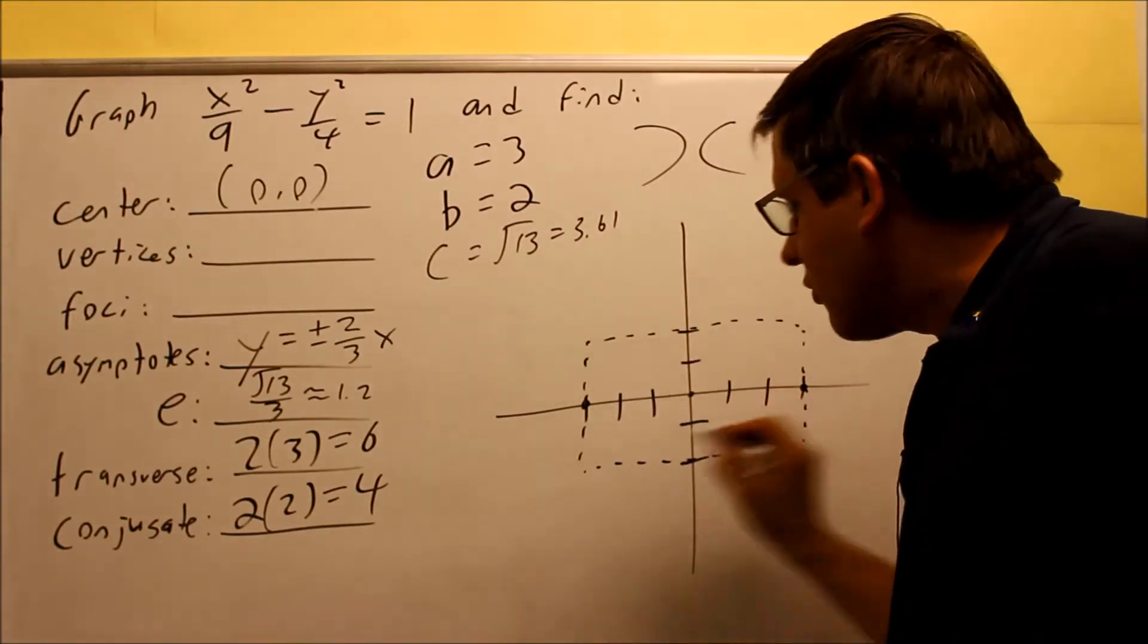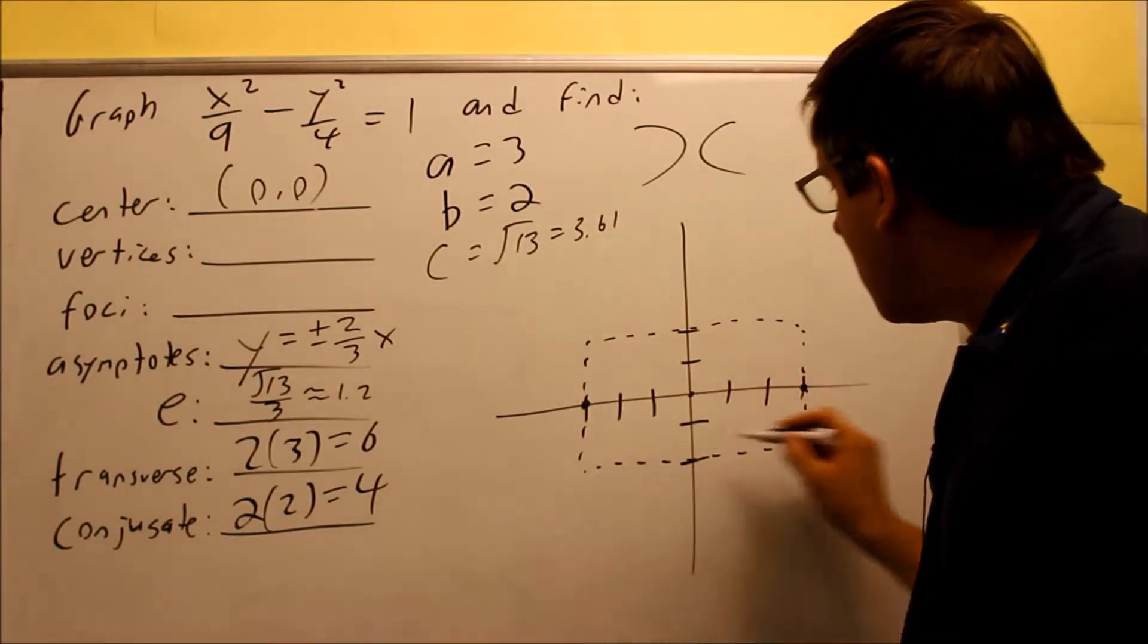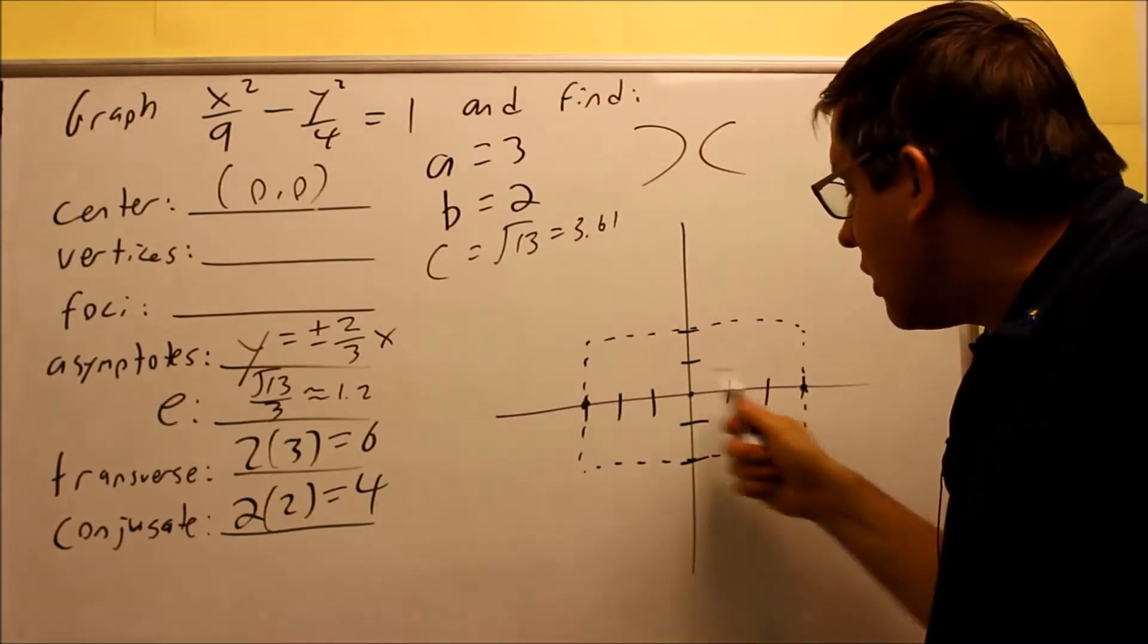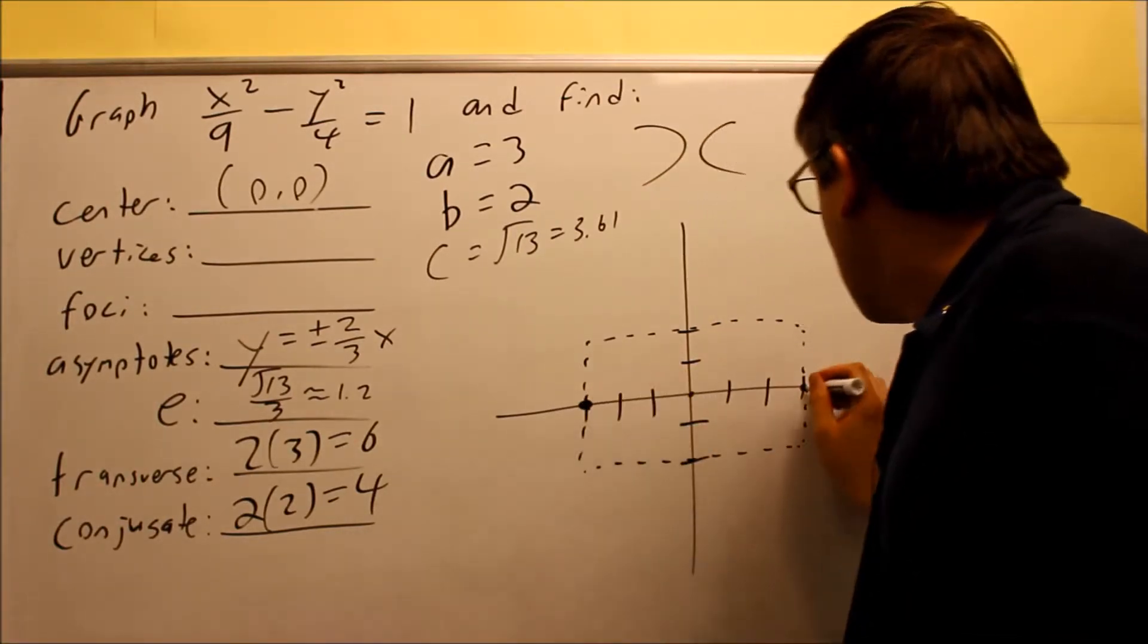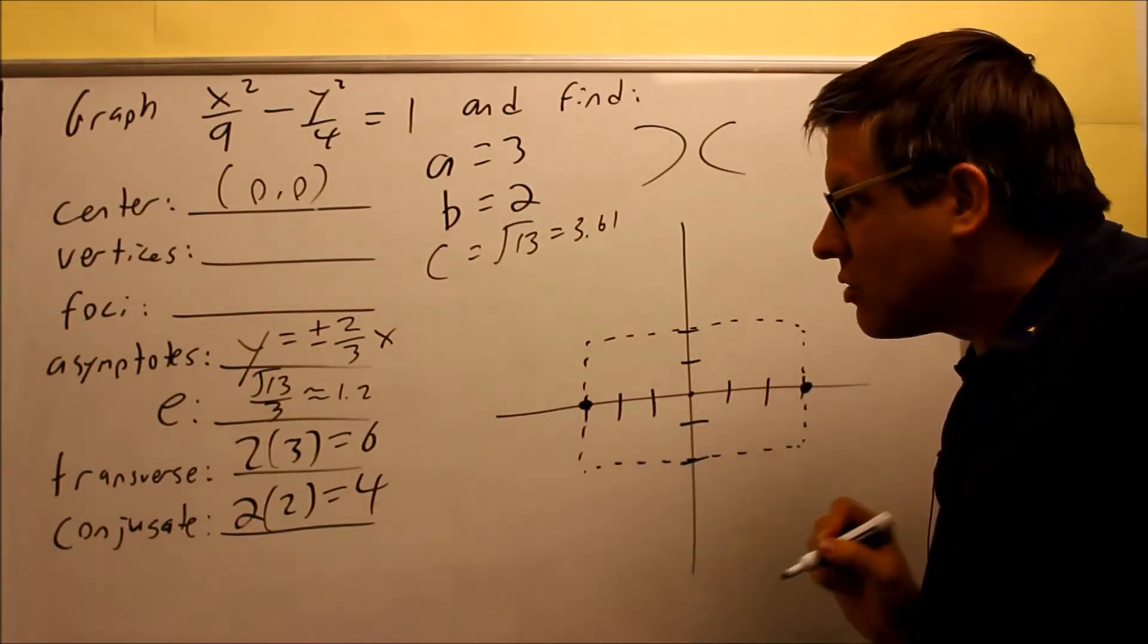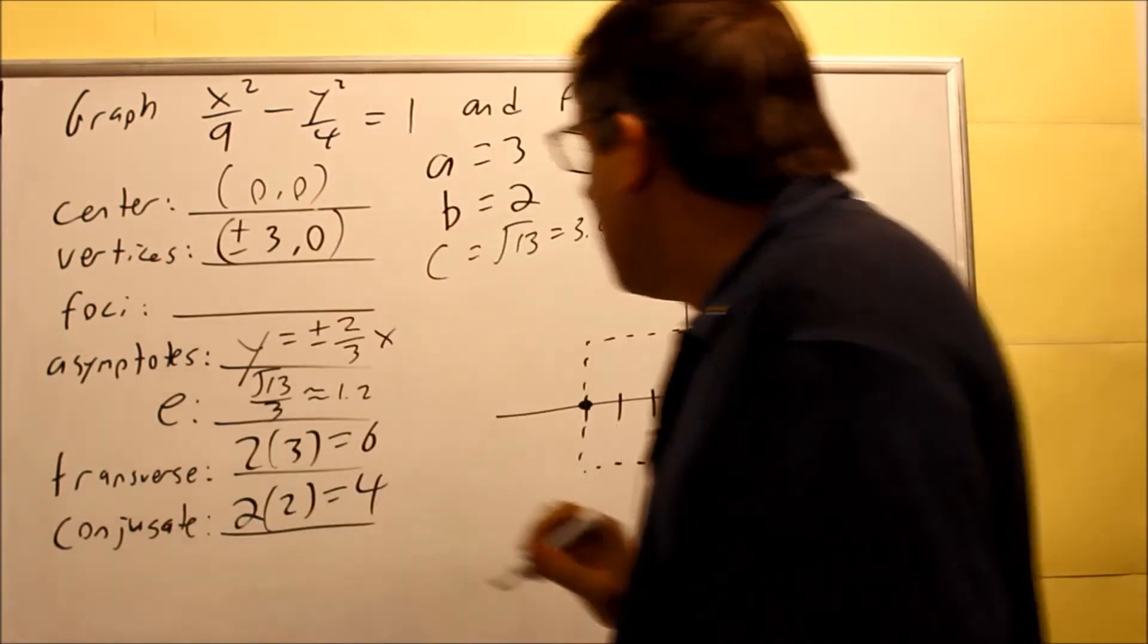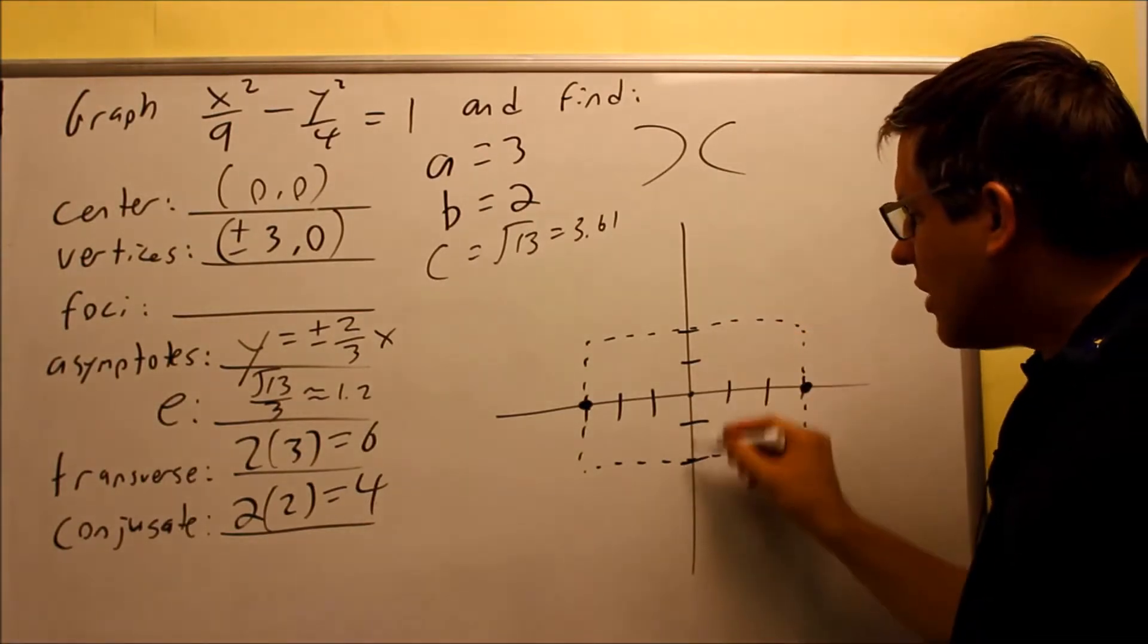This is forming the boundaries of our box here. We have a box that's on the inside here and the box looks like this. We're making a box. Instead of drawing in the ellipse like we did before in the last section, we're instead making a box here, and the box is formed by the a and the b.